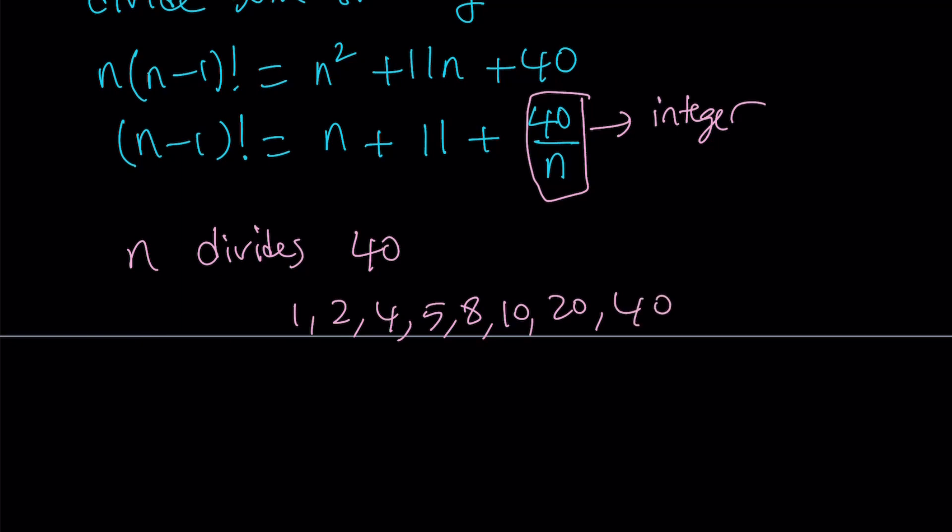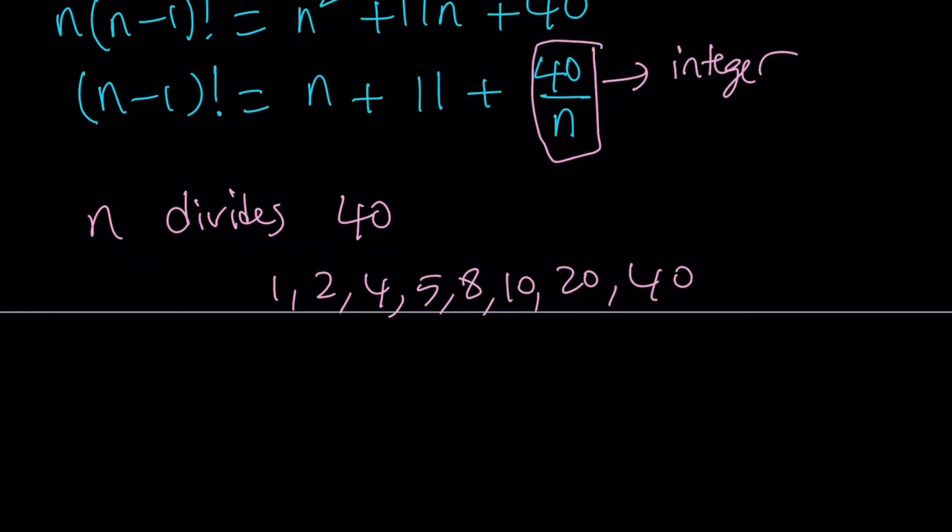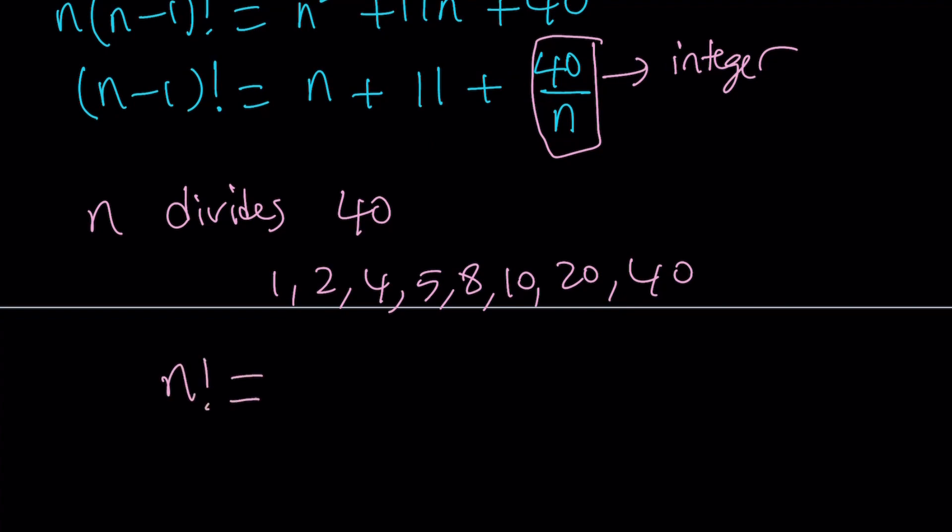Now you've got to consider the original equation. Our original equation was n factorial equals n squared plus 11n plus 40. Notice that if n is 40, obviously the left-hand side is going to be super-duper large. 40 is not going to work. 20 is not going to work. So quite a few of these numbers are not going to work. But which one works? Are we going to test every single one of them?